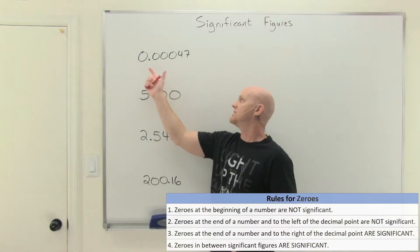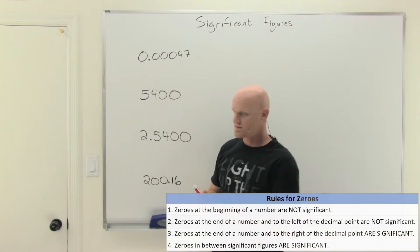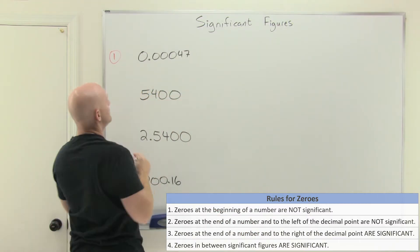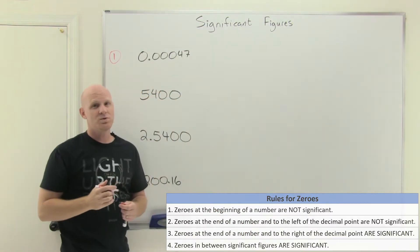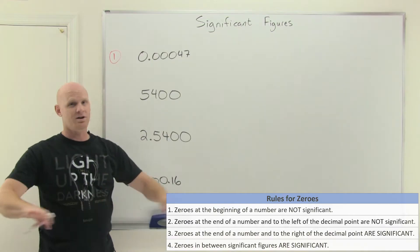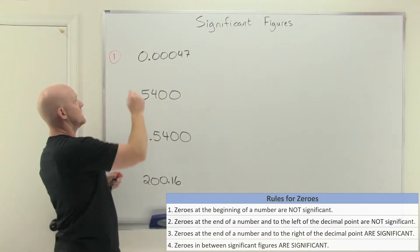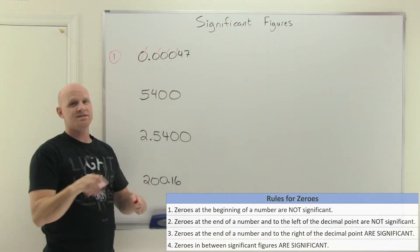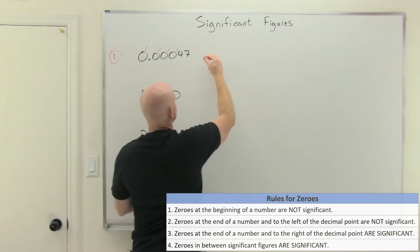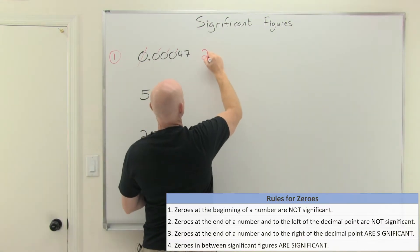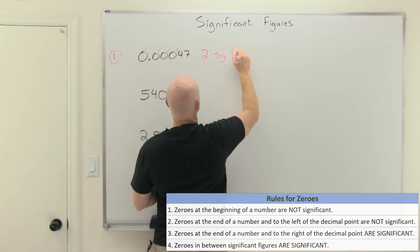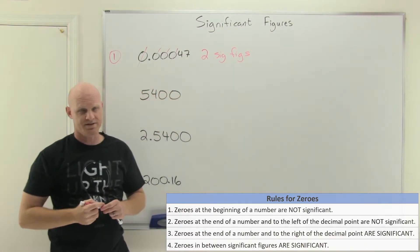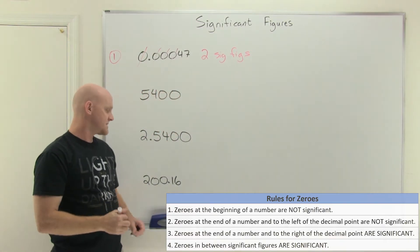Rule number one: if a number starts with zeros, none of those zeros are significant. So for a number like 0.0052, the leading zeros — not this one, not this one, not this one — they're not significant at all. Overall, we'd say that number has two significant figures, or two sig figs for short. Zeros that begin a number are never significant.